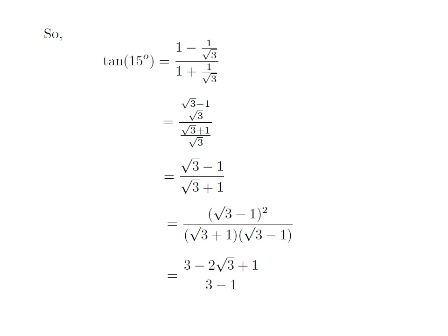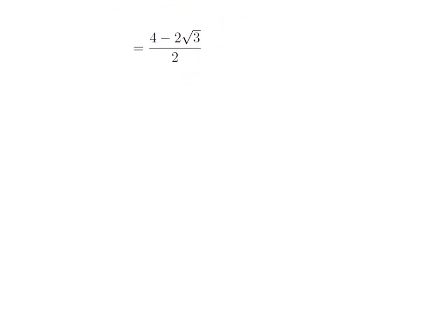So, the denominator is equal to square of square root of 3 minus square of 1. Square of square root of 3 is 3 and square of 1 is 1, so we get 3 minus 1, which is 2, in the denominator. If we further simplify, we get 4 minus 2 into root of 3, divided by 2. Further simplification gives us 2 minus root of 3.